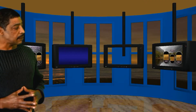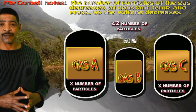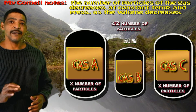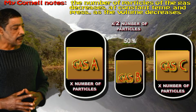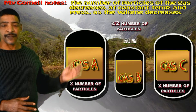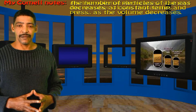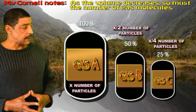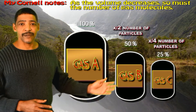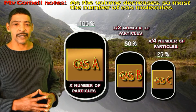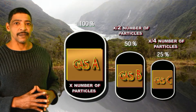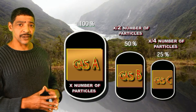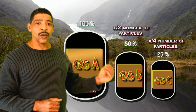If the volume of gas B is decreased by 50%, maintaining the same pressure and temperature, then the number of particles will be 50% of the original volume. If gas C's volume decreases to one-fourth, or 25%, assuming the temperature and pressure are the same, then container C will hold one-fourth the original number of particles.